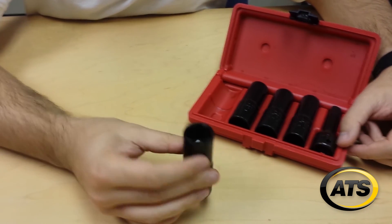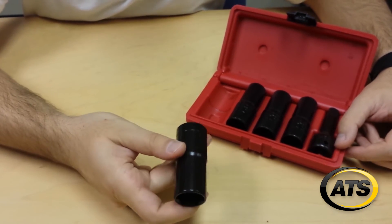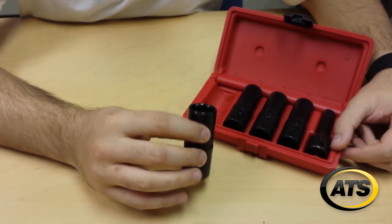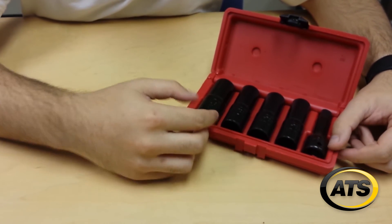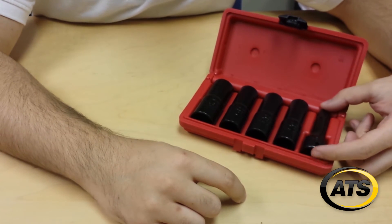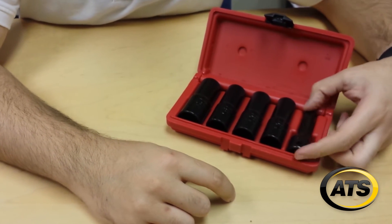As you can see they're all thin wall, high quality flip sockets. They're all made in USA and so they're flip sockets to use with an extended anvil impact wrench.